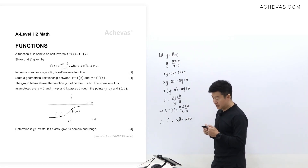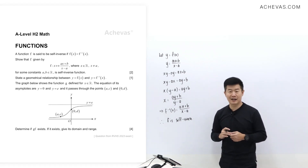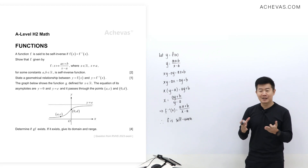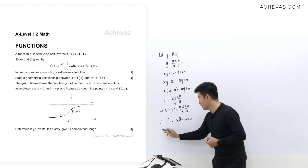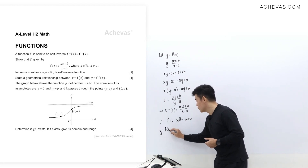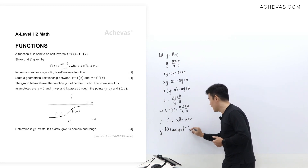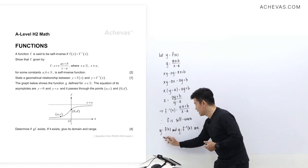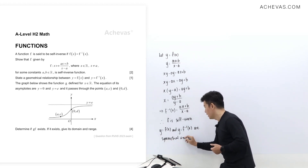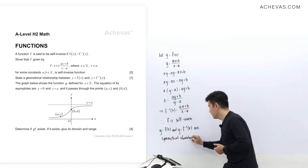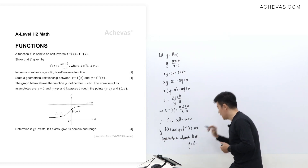We next need to state a geometrical relationship between y = f(x) and y = f⁻¹(x). They are symmetrical about the line y = x. So y = f(x) and y = f⁻¹(x) are graphs that must be symmetrical about the line y = x.